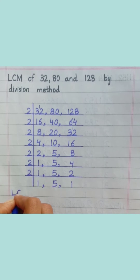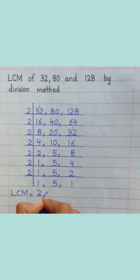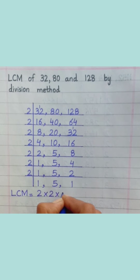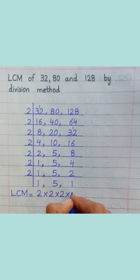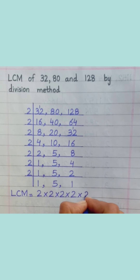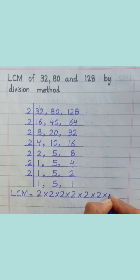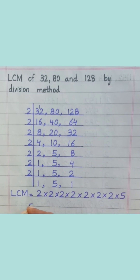LCM equals 2 multiply 2, multiply 2, multiply 2, multiply 2, multiply 5 equal 640.